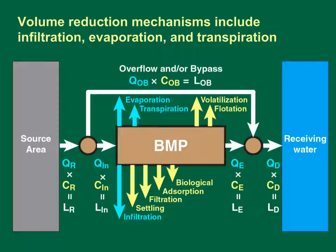Volume reduction mechanisms include infiltration, evaporation, and transpiration. These mechanisms reduce the total load of runoff to the receiving water because loads are the product of flows and concentrations. This diagram shows a source area on the left, a BMP in the center, an overflow or bypass route above the BMP, and the receiving water on the right. Flow terms are shown in blue and concentration terms are shown in yellow. It is generally assumed that volume reductions for overflow or bypass flows are negligible.